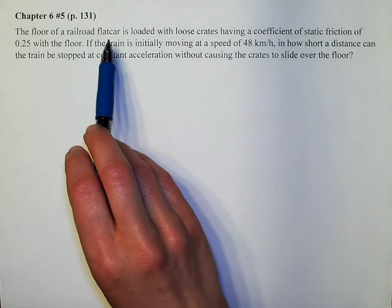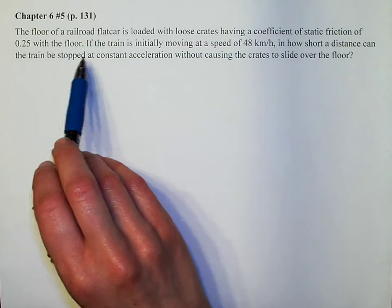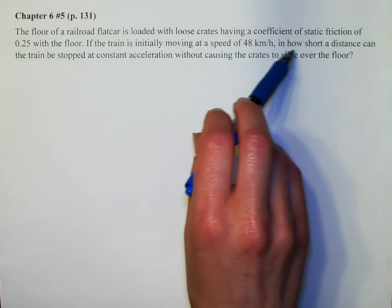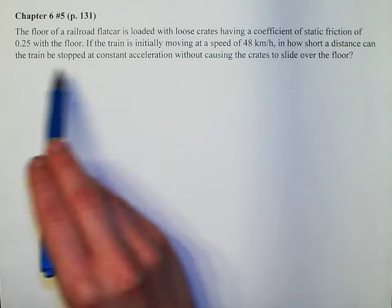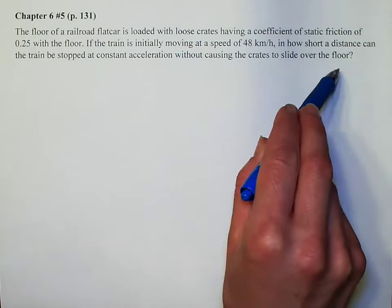The floor of a railroad flatcar is loaded with loose crates having a coefficient of static friction of 0.25 with the floor. If the train is initially moving at a speed of 48 kilometers per hour, how short a distance can the train be stopped at constant acceleration without causing the crates to slide over the floor?